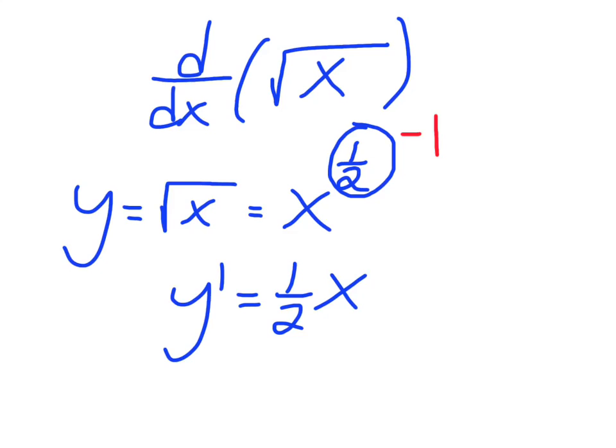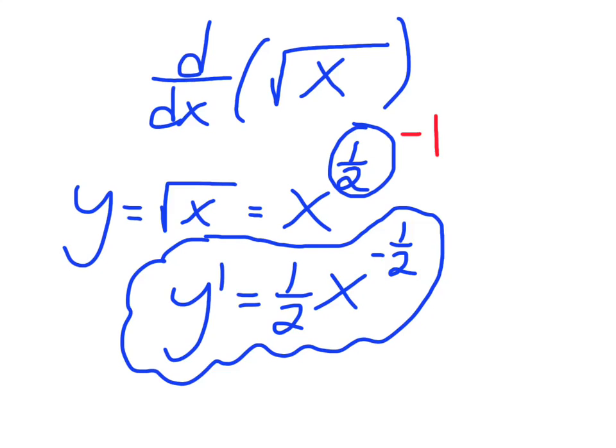So, I'll end up with 1 half subtract 1. So, I end up with 1 half subtract 1. It's negative 1 half. So, there it is. There is the derivative of x to the 1 half, or root x.